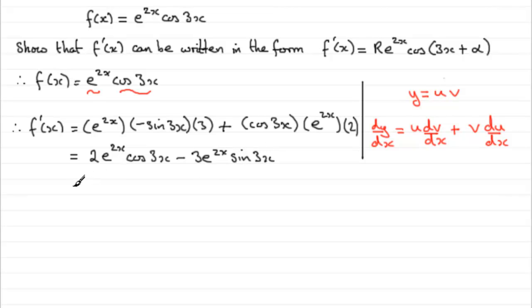Now you should be able to see that we can pull out e to the 2x as a common factor. It's in both of those two terms. So we've got e to the 2x then the bracket, and we've got 2 cos 3x and then minus the 3 sin 3x. And this is looking familiar because this was the expression that we had in the first part.